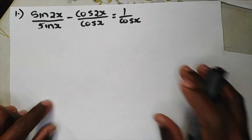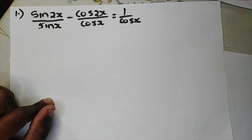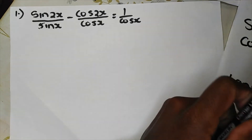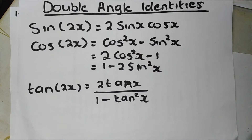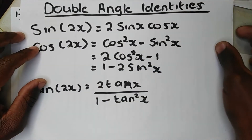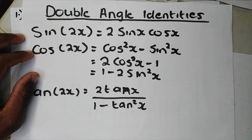Hi guys, in today's video we're going to be doing double angle identities equations. Here are the double angle identities: sin 2x = 2 sin x cos x, and the others — you should know these identities before you solve this kind of question. If you are given a question paper, this is how it looks.